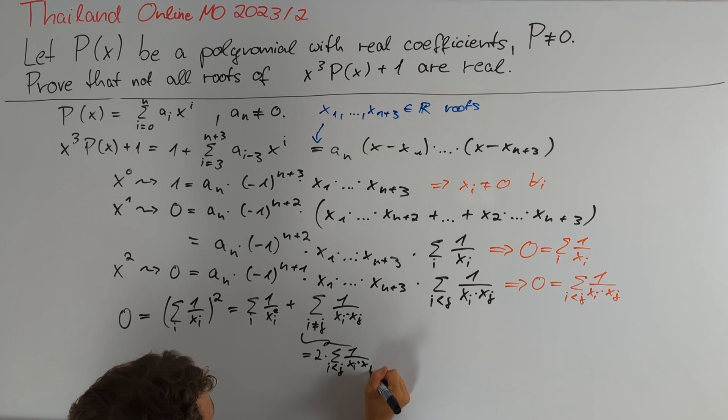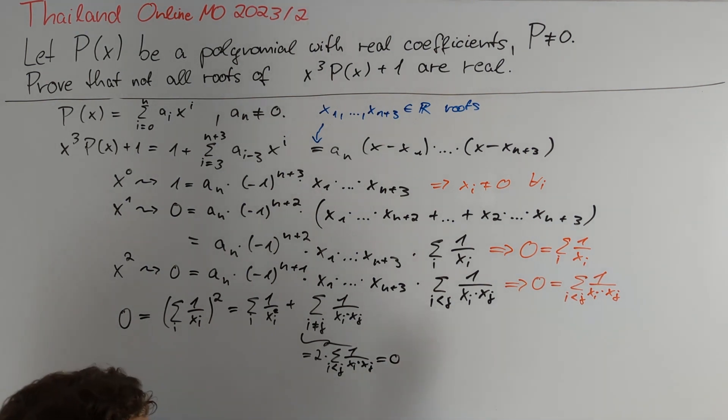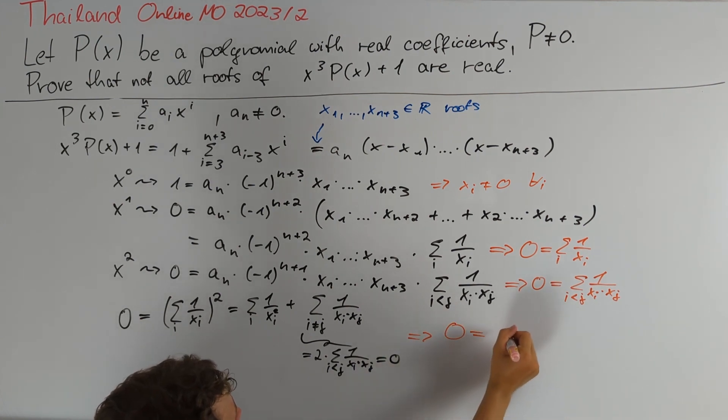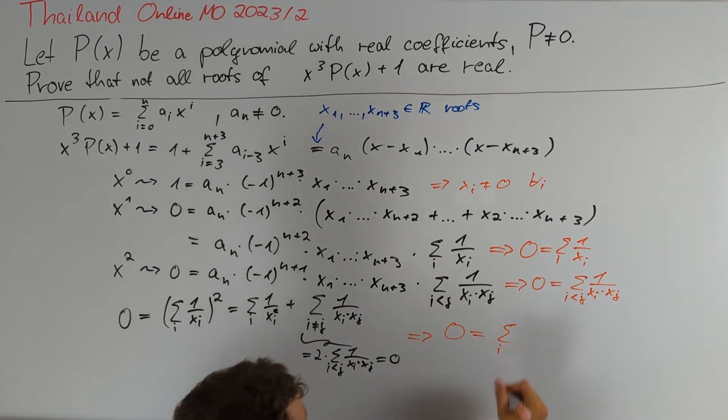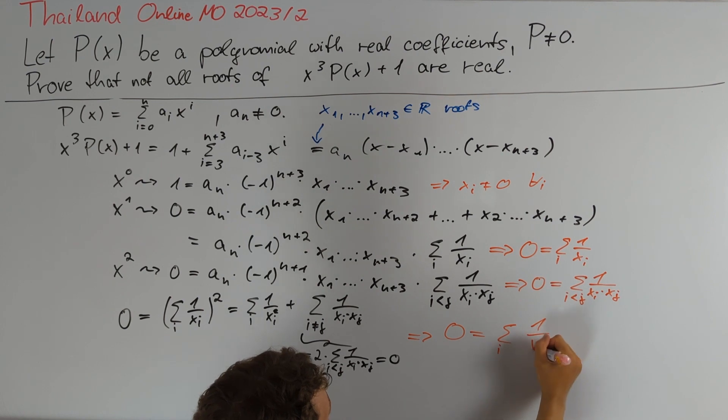But we know this is equal to 0 and therefore we can conclude that 0 is equal to the sum over all indices i of 1 divided by xᵢ squared.